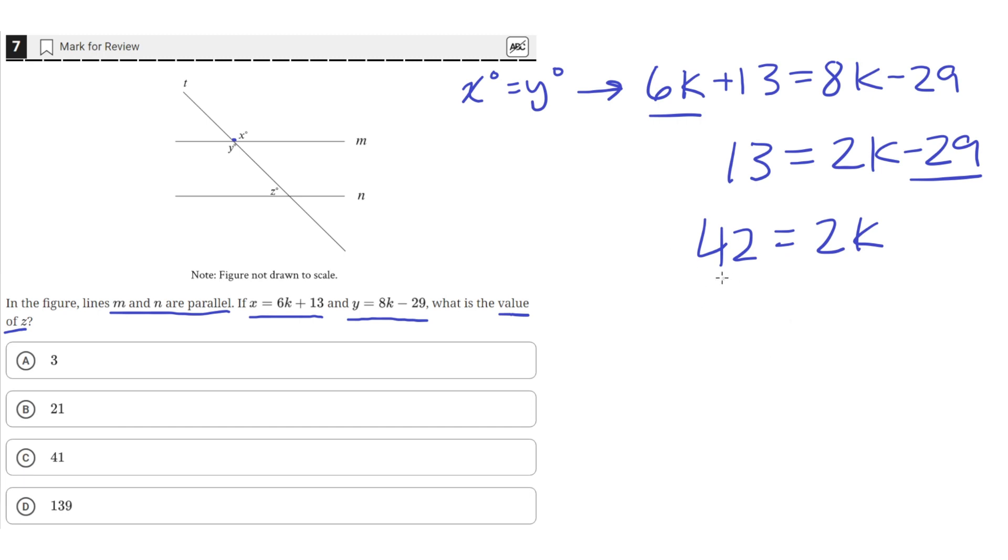Then we can divide both sides by 2 to isolate K. So K will be equal to 21.